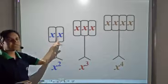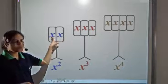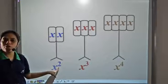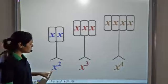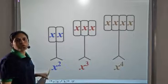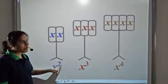So here x is multiplied two times, so it acquires a power of 2. We write it x raised to the power 2, and we can call it x square.